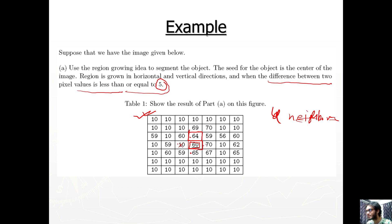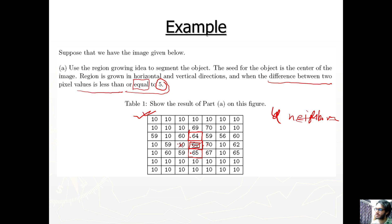Checking neighbor 70: the difference between 60 and 70 is 10, so 70 does not satisfy the criteria. Checking neighbor 65: the difference between 60 and 65 is 5, which is equal to 5, so 65 satisfies the criteria and is added to the region. Now we have visited pixel 60, and 64 and 65 are connected to the region.